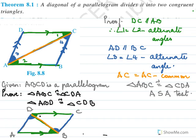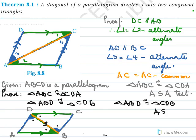So these two triangles are also congruent by the ASA test. We have this angle equal to this angle, this angle equal to this angle, and the side is common. So by ASA test, triangle ABD is congruent to triangle CDB.